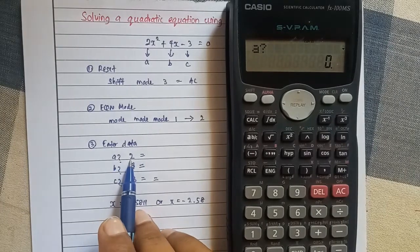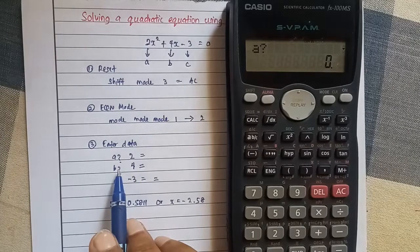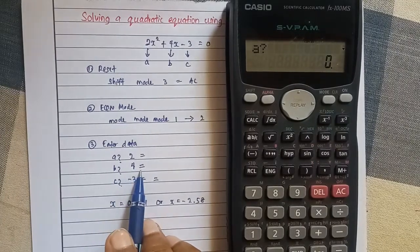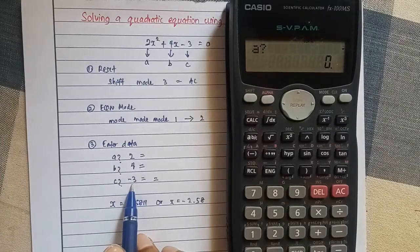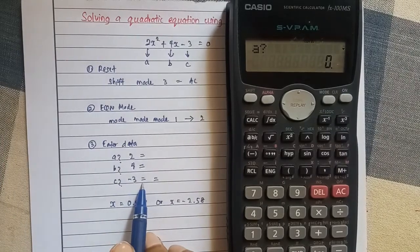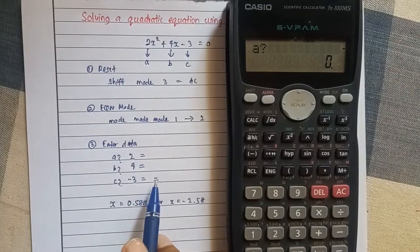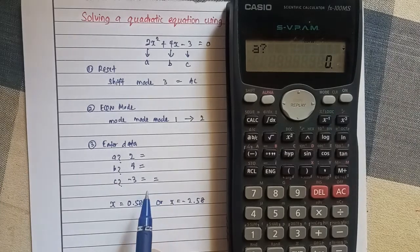A value is 2, so you need to press 2 and then equals. The value of B is 4, so you need to press number 4 and equals. The value of C is minus 3, so you need to press minus 3 and equals. Since there are two roots, you can press the equal sign again to get the other value of X.